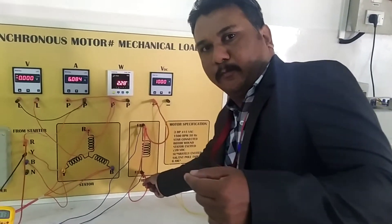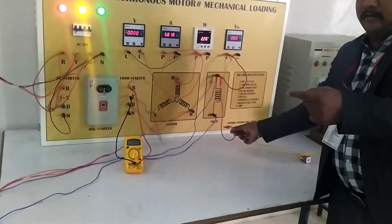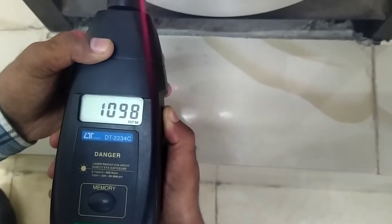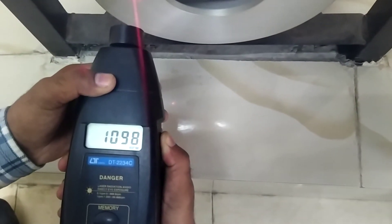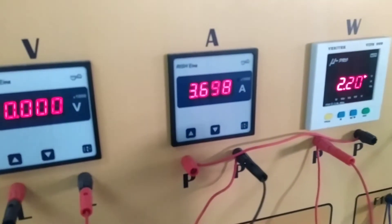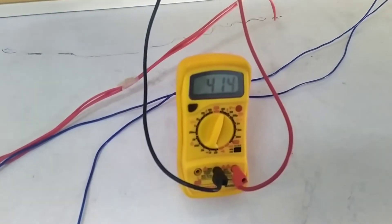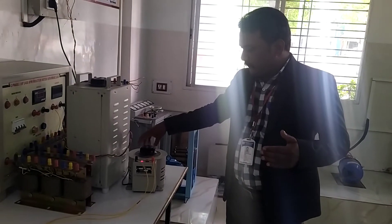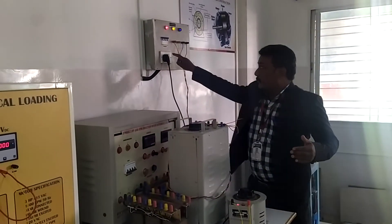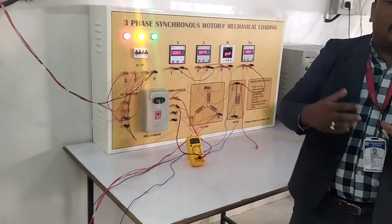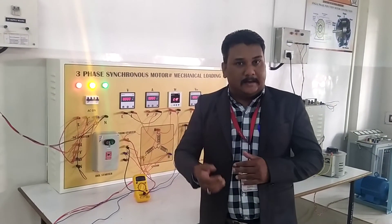After applying DC excitation, the speed increases. The synchronous motor approaches synchronous speed. Now, before synchronization and after synchronization, we are performing the practical. The supply voltage is given, and accordingly we are reducing the excitation to observe the behavior at synchronization.